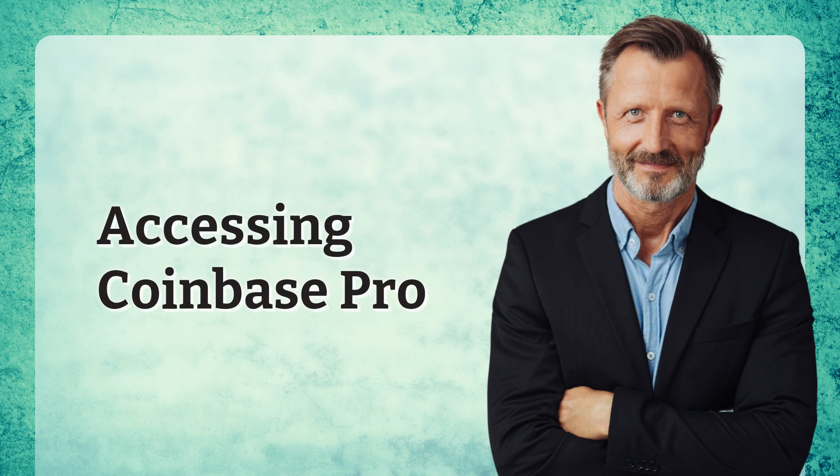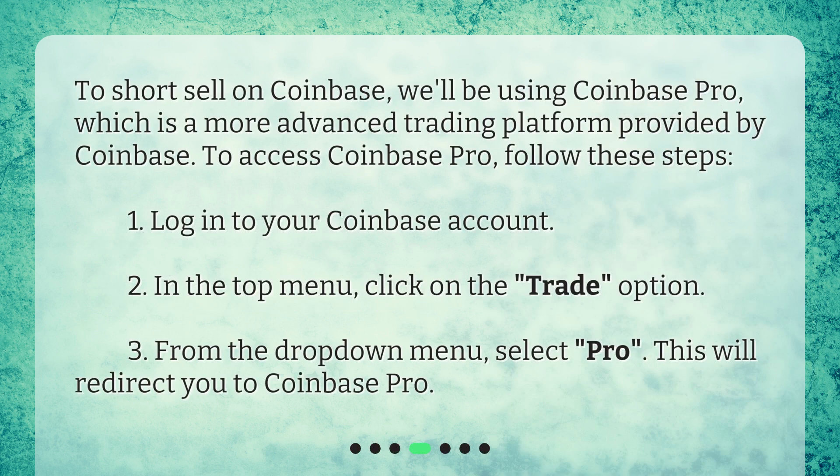To short sell on Coinbase, we'll be using Coinbase Pro, which is a more advanced trading platform provided by Coinbase. To access Coinbase Pro, follow these steps: one, log in to your Coinbase account; two, in the top menu click on the Trade option; three, from the drop-down menu select Pro. This will redirect you to Coinbase Pro.